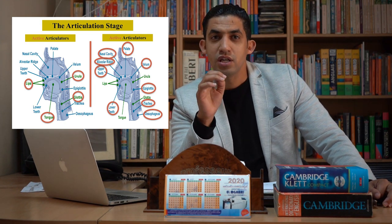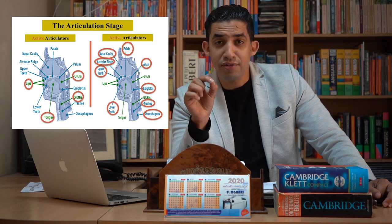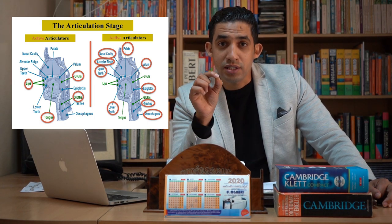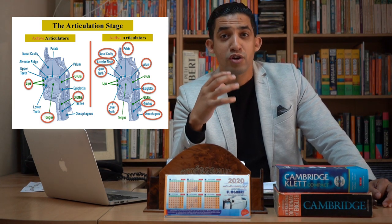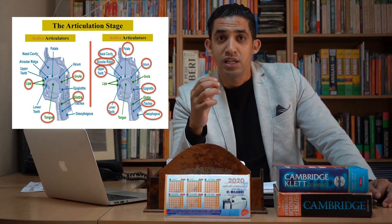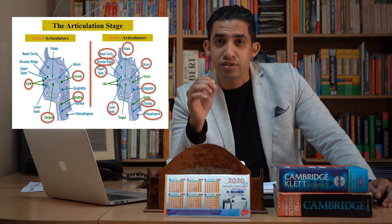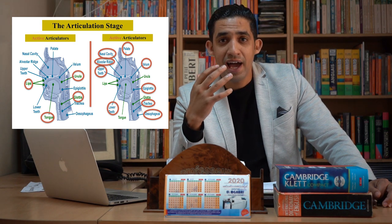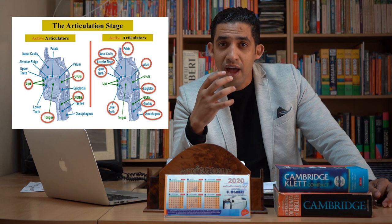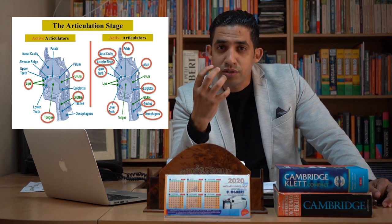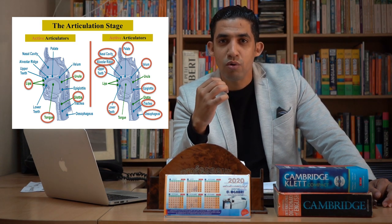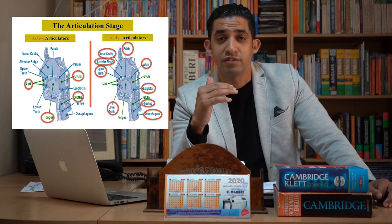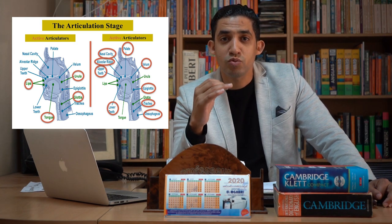The last stage is articulation. At this stage we are no longer talking about air or voice — we talk about sounds. Articulators play a crucial role by shaping the air at the vocal tract. In the vocal tract we have articulators like the alveolar ridge, lips, upper and lower teeth, the palate, and the soft palate. These articulators shape the sounds in different places — be it the oral cavity or the nasal cavity.